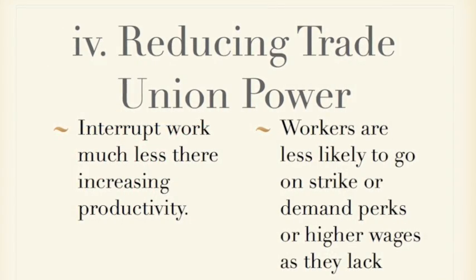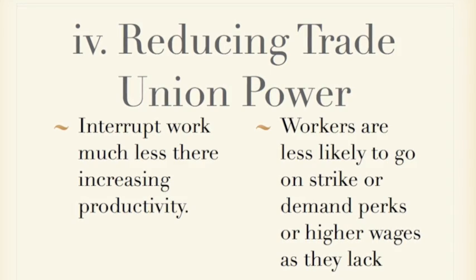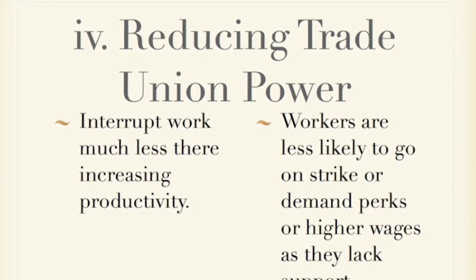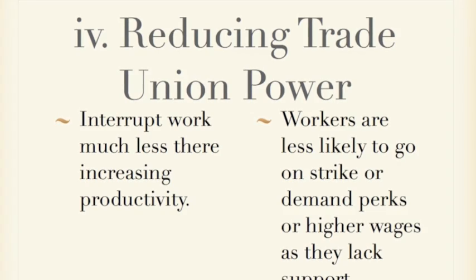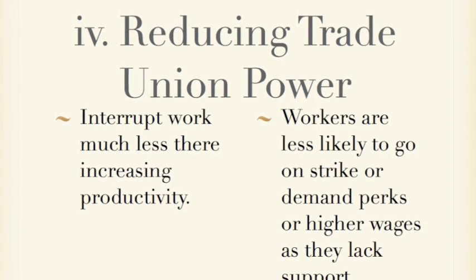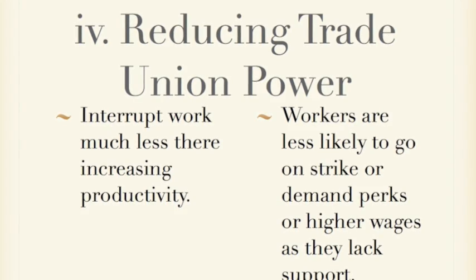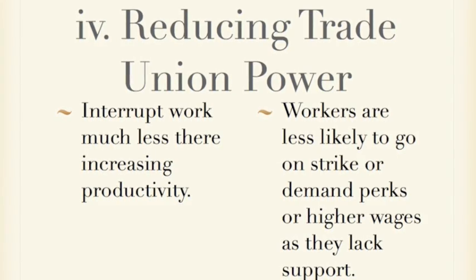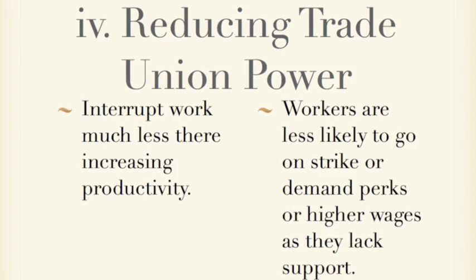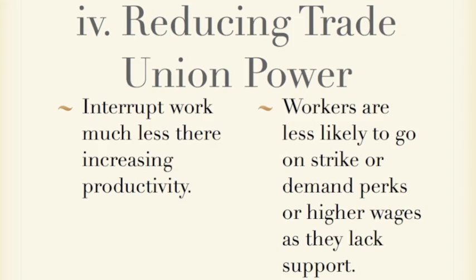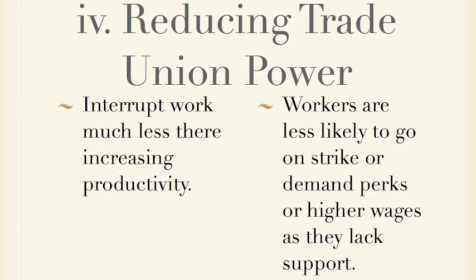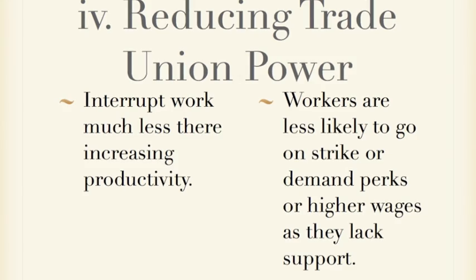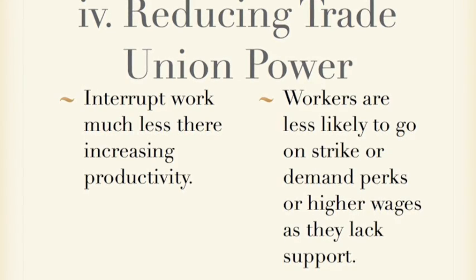Number four is reducing trade union power. If trade unions interfere less in a firm's workings, more productivity can exist. If workers are less likely to go on strike or demand higher wages because they lack support, firms can run more efficiently and consistently. The problem is that it's not very realistic — a government reducing trade union power is an unpopular decision. And just as with minimum wage reductions, if workers are constantly stressed and their well-being suffers, they are likely to work less hard and productivity will fall.